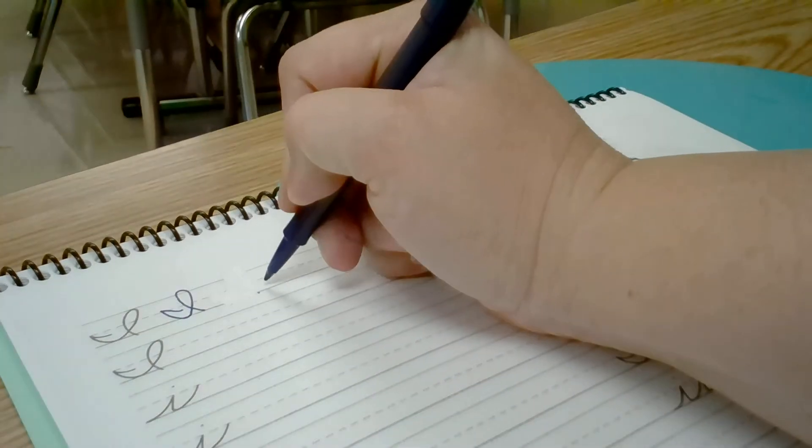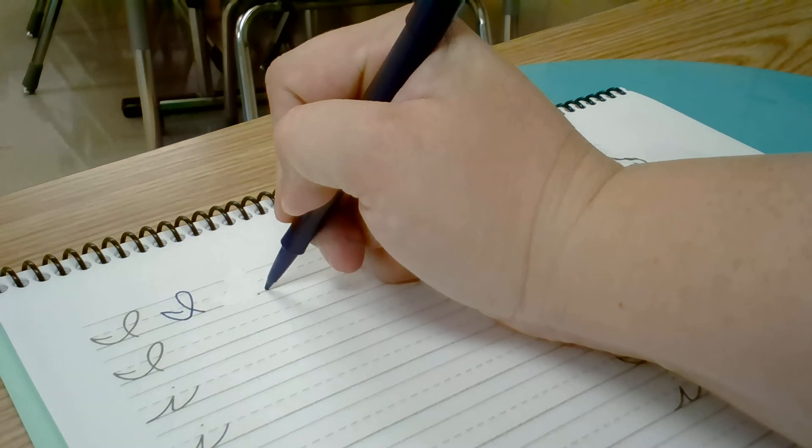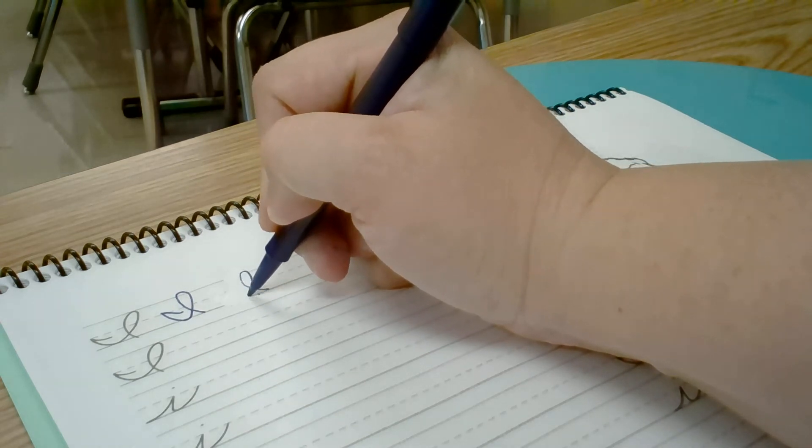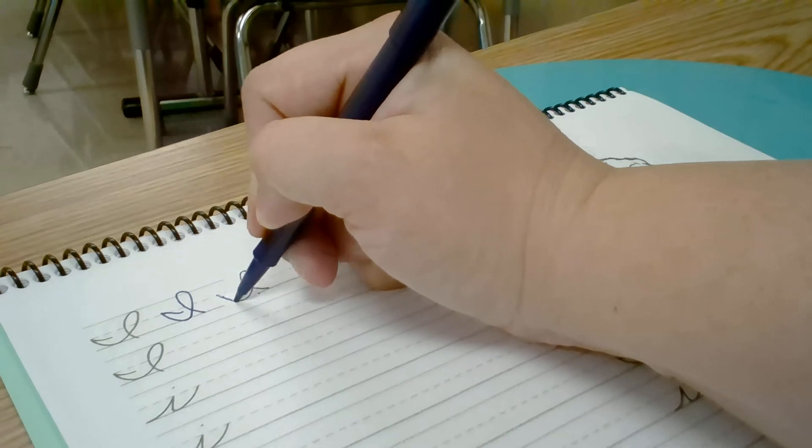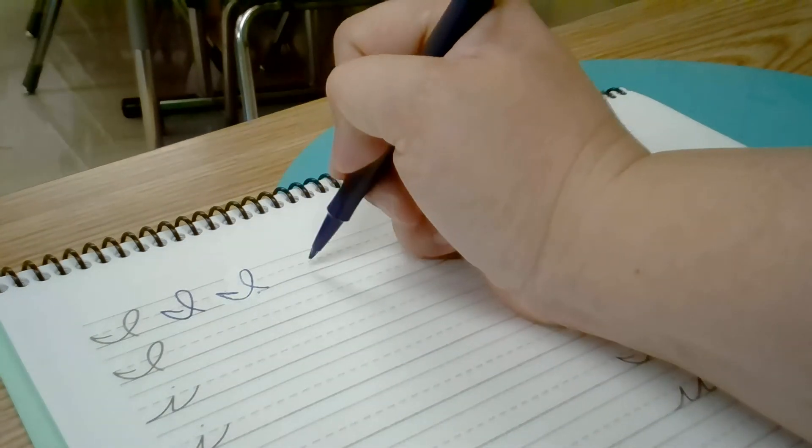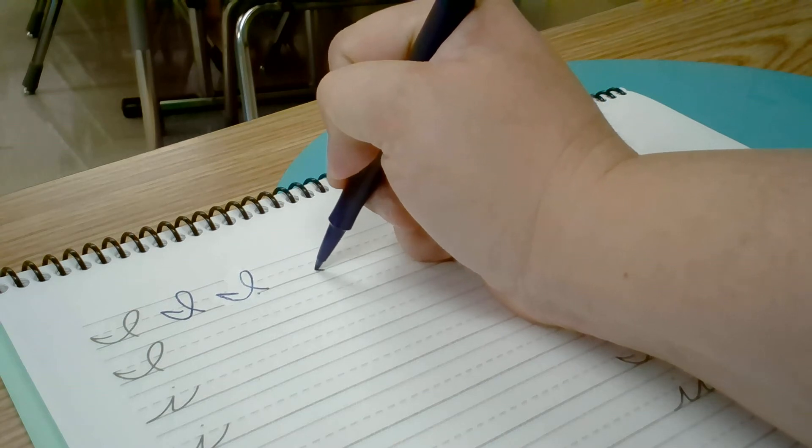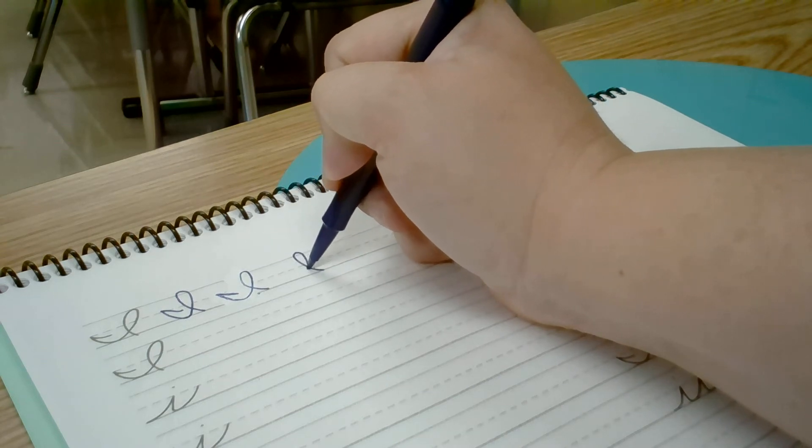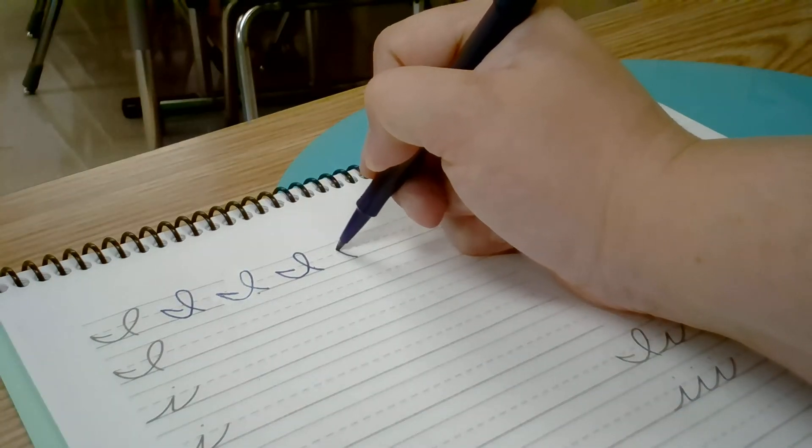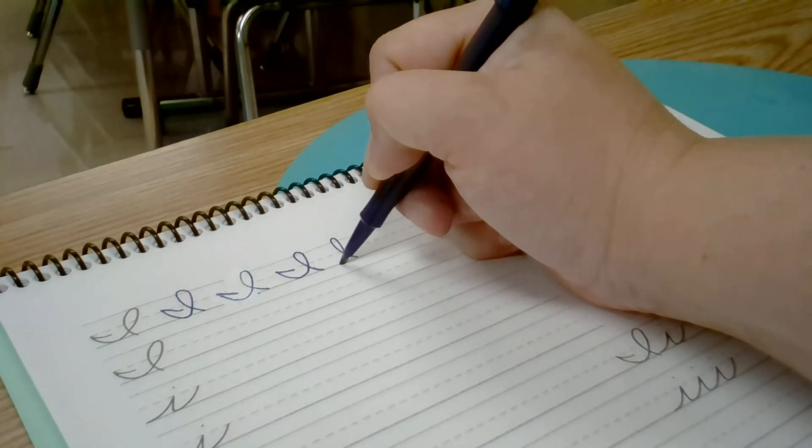To make the cursive I, you start at the baseline, loop backwards up to the top, back down to the baseline. As you go, remember that you want your letters to be slanted, which is not always easy to do.